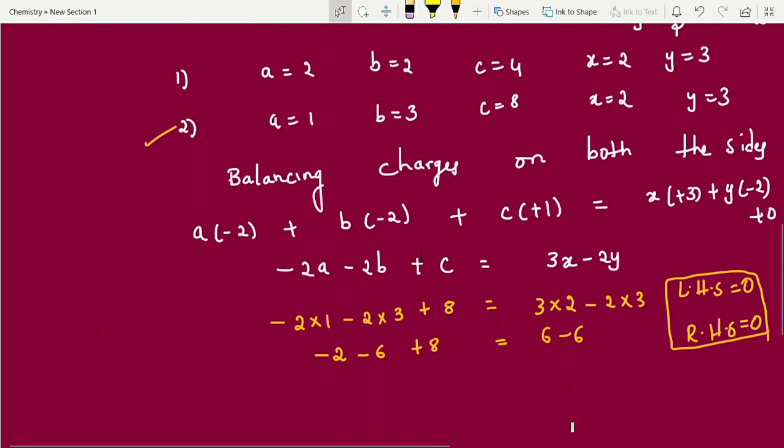Now is it 0? Left hand side, check it. Left hand side, minus 8 plus 8. This is 6 minus 6. You are also getting 0. Yes, your answer is correct. You go for the next option. Definitely it will not be 0.